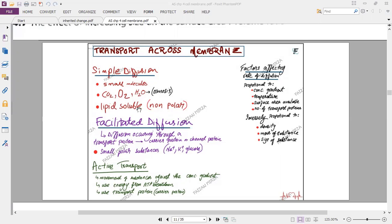Lipid soluble substances, which can dissolve in the phospholipid bilayer, can also pass through the phospholipid tails. They are non-polar, so they all move by simple diffusion.